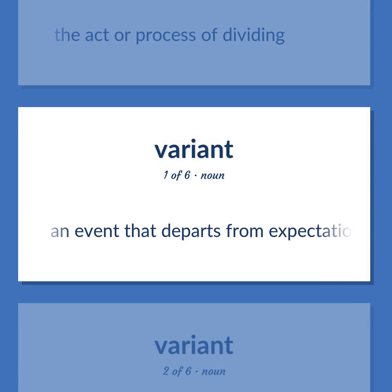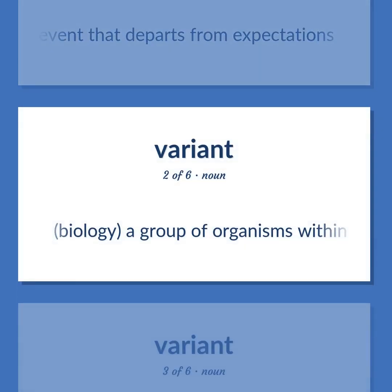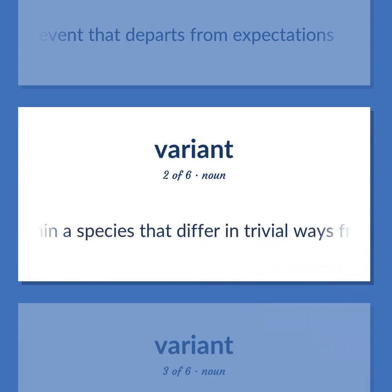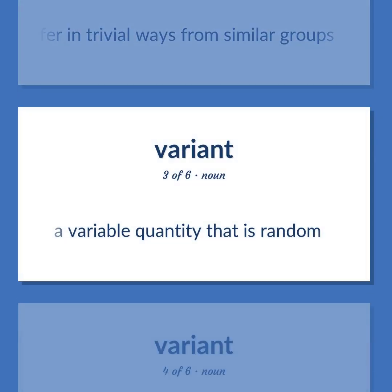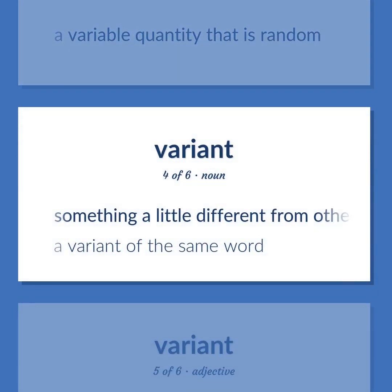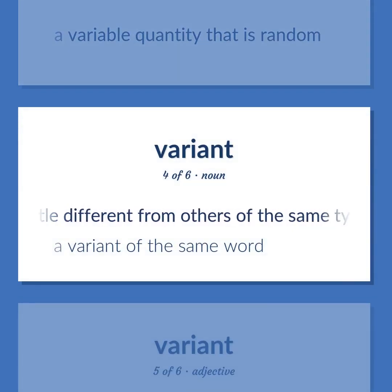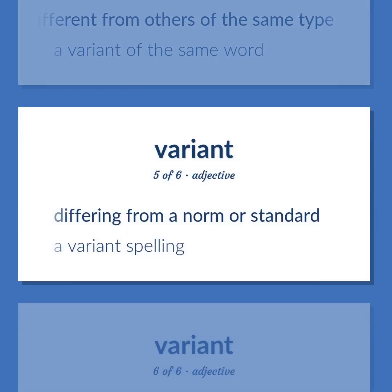An event that departs from expectations. Biology: a group of organisms within a species that differ in trivial ways from similar groups. A variable quantity that is random. Something a little different from others of the same type — a variant of the same word. Differing from a norm or standard — a variant spelling.